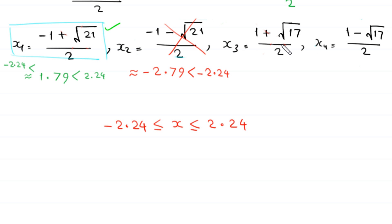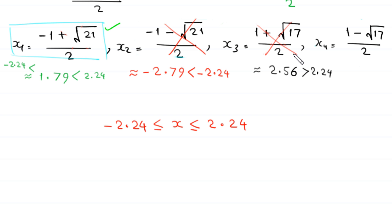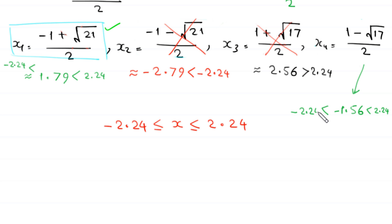From the second equation, x3 equals 1 plus root 17 over 2 is approximately 2.56, which is greater than 2.24, so x3 is rejected. x4 equals 1 minus root 17 over 2 is approximately negative 1.56, which is between negative 2.24 and 2.24, so x4 is a valid solution. Therefore, we have two solutions to this equation.